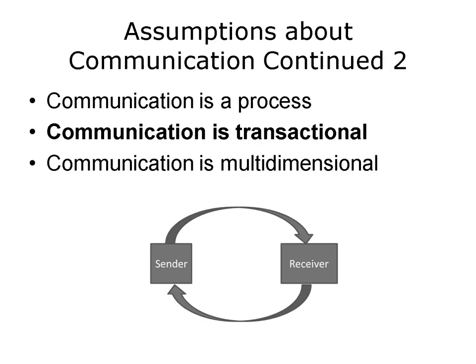The transactional nature of communication suggests a reciprocal relationship where there's a continual feedback loop. In this way, the sender influences the receiver. In turn, the sender is influenced by the receiver. Stated more simply, communication can be thought of as a two-way street.